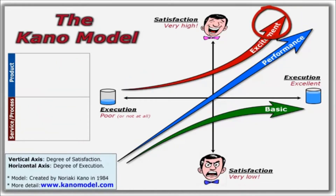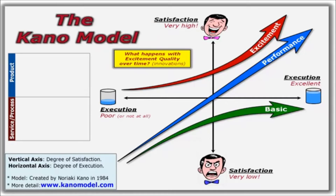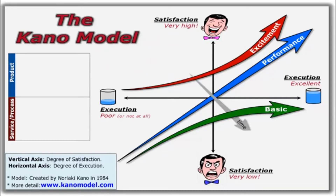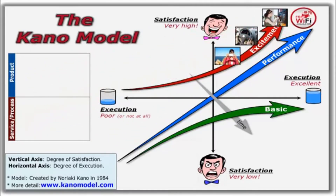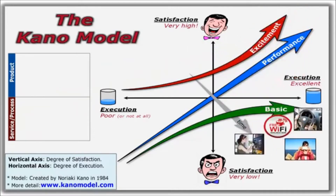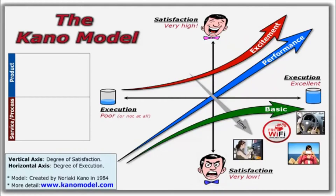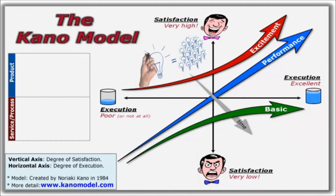Excitement requirements delight the customer when present, but don't result in any dissatisfaction if they are absent. Another important detail about the Kano model, especially excitement quality, is how requirements can jump categories over time. History has proved that what is exciting today will be asked for tomorrow and expected the next day. Excitement qualities will become performance and eventually basic. Examples include cameras and internet access in cell phones, power steering in a car, pay at the pump at a gas station, and free wireless internet in most coffee shops. All were unique innovations at one point, but are now common practice and expected by customers. This highlights the need to continually prime the pump with new ideas and innovations, because excitement qualities will differentiate your products and services for only a brief period before they're copied, circumvented, or adopted by all competitors.